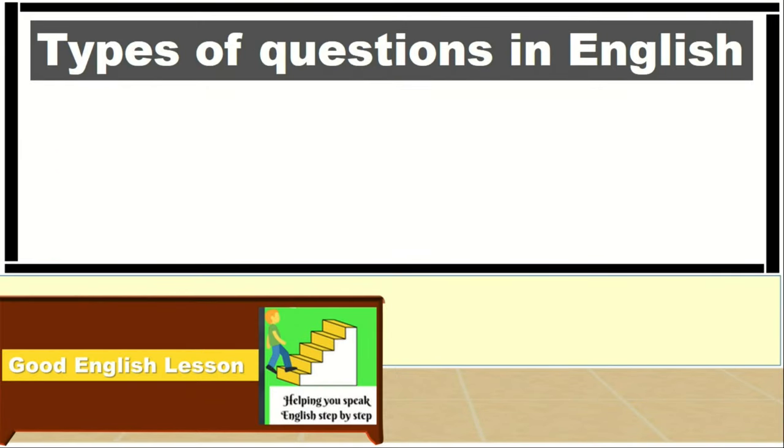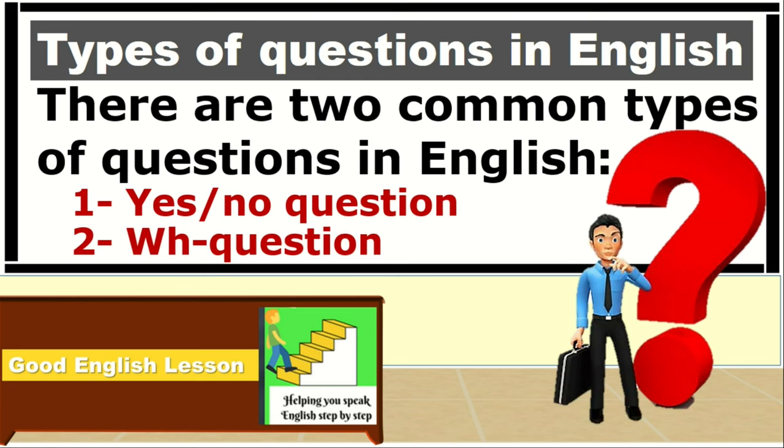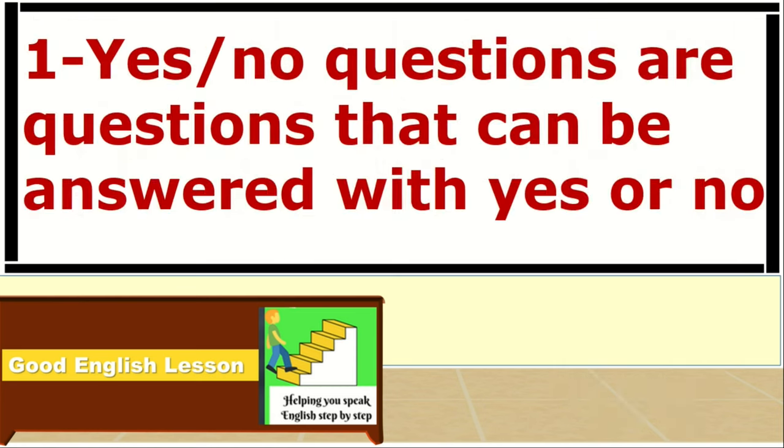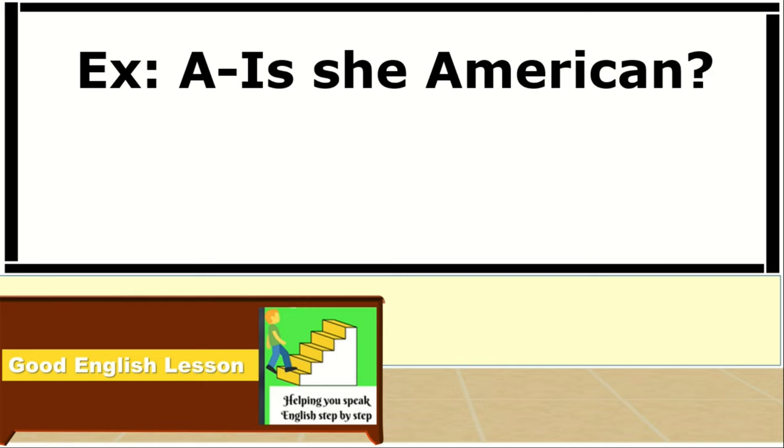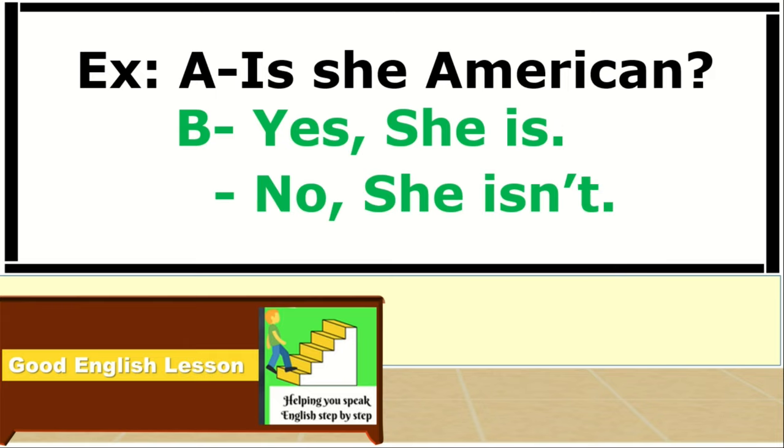Types of Questions in English. There are two common types of questions in English: yes/no questions and wh-questions. Yes/no questions are questions that can be answered with yes or no. For example, is she American? Yes, she is. No, she isn't. We call it yes/no question because you can answer by saying yes or by saying no. Every time you have a question and you answer yes or no, call it yes/no question.